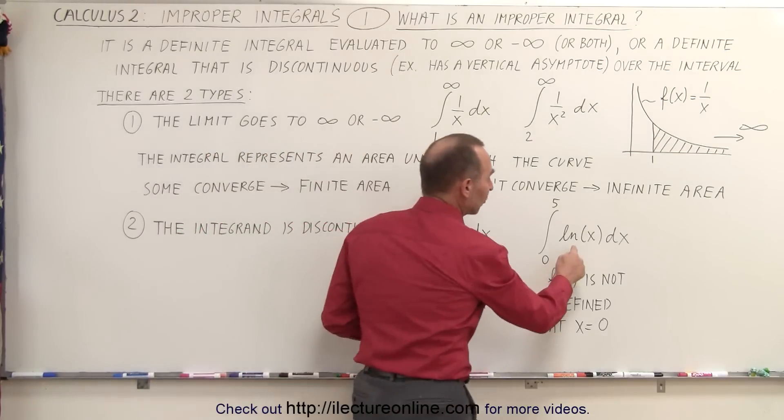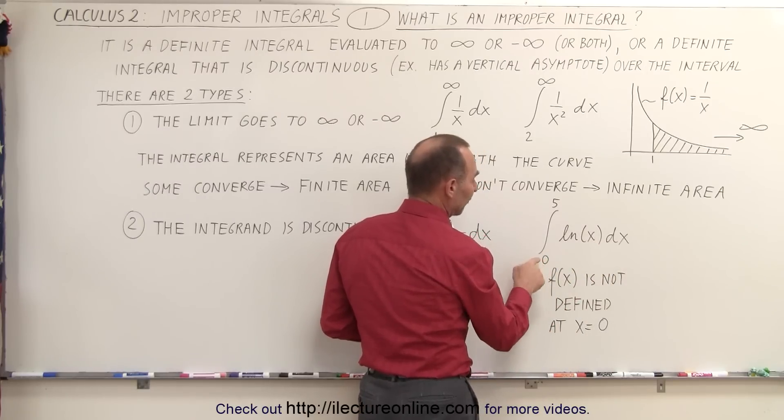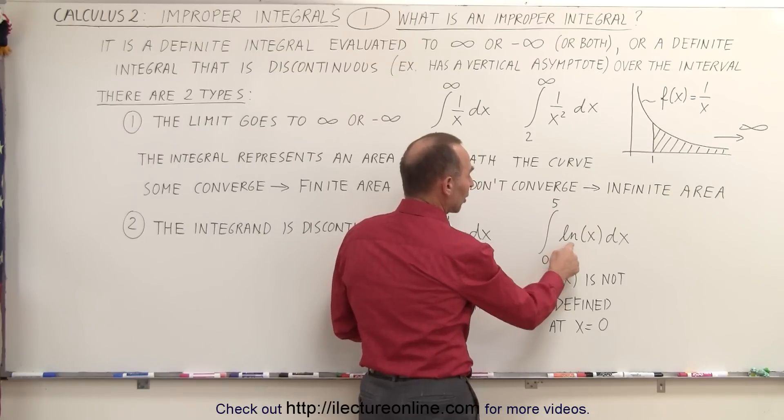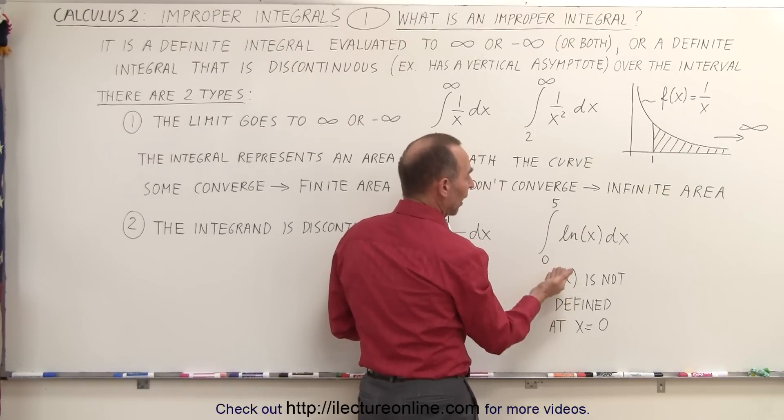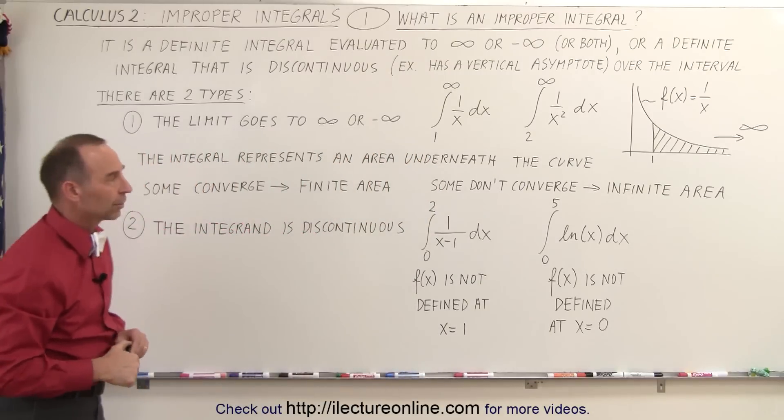Here's another example, the natural log of x dx. And we have to integrate it or evaluate it from 0 to 5. And then we realize that the natural log of 0 is not defined. So f of x is not defined at x equals 0. Again, that makes it an improper integral.